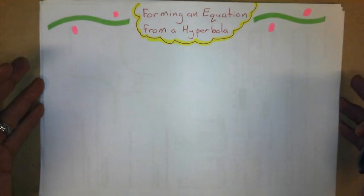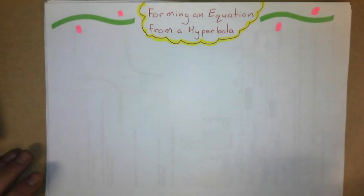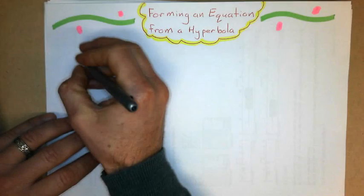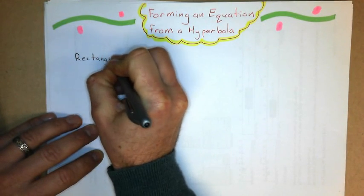Alright, what I'll show you how to do is how to form an equation from a hyperbola, and the types of hyperbola we're going to be doing are called rectangular hyperbola, which have a general form to them.